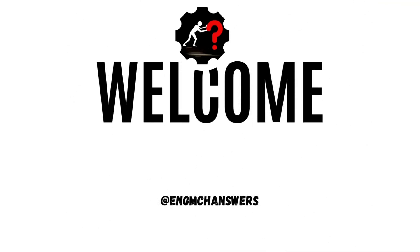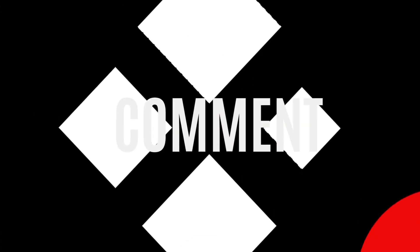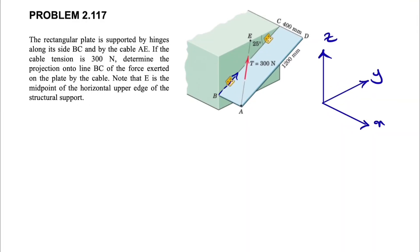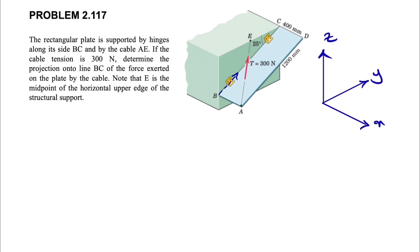Welcome back. In today's question we have another question from chapter two. We have a rectangular plate that is supported by hinges along its side BC and by a cable A. If the cable tension is 300 newtons, we need to determine the projection onto line BC of the force exerted on the plate by the cable. E is the midpoint of the horizontal upper edge of the structural support. Let's call our xyz as I'm showing here and get to the question.